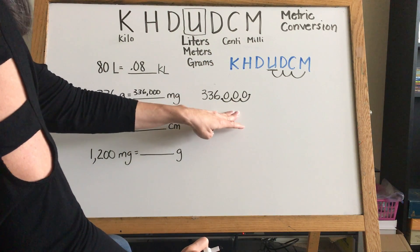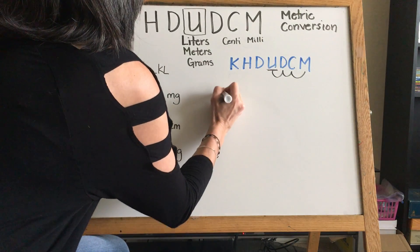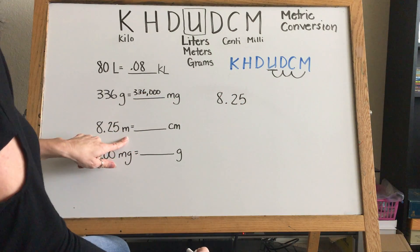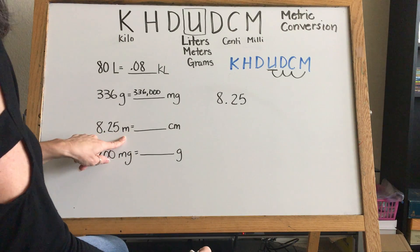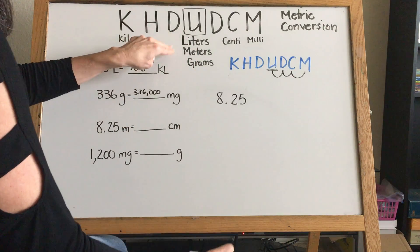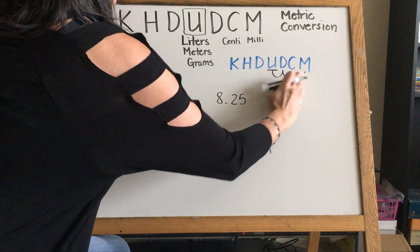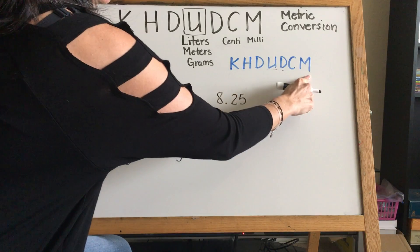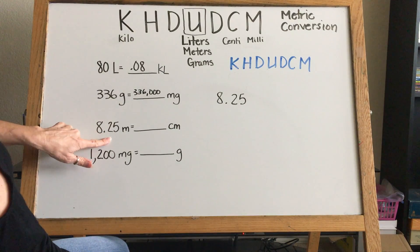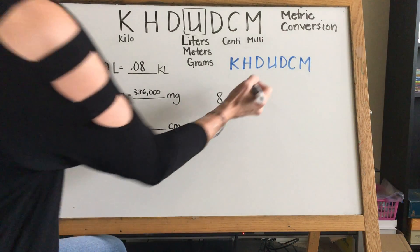We've been given meters this time — 8.25 meters. How do we know that's not milli? Because anytime it's milli it's going to be a double letter: mm for millimeter, ml for milliliter, and mg for milligram. You have to be careful because sometimes you'll mistake m for meters, but mm is milli. So we're starting with meters — our decimal is already in our number — and we're converting to centimeters.